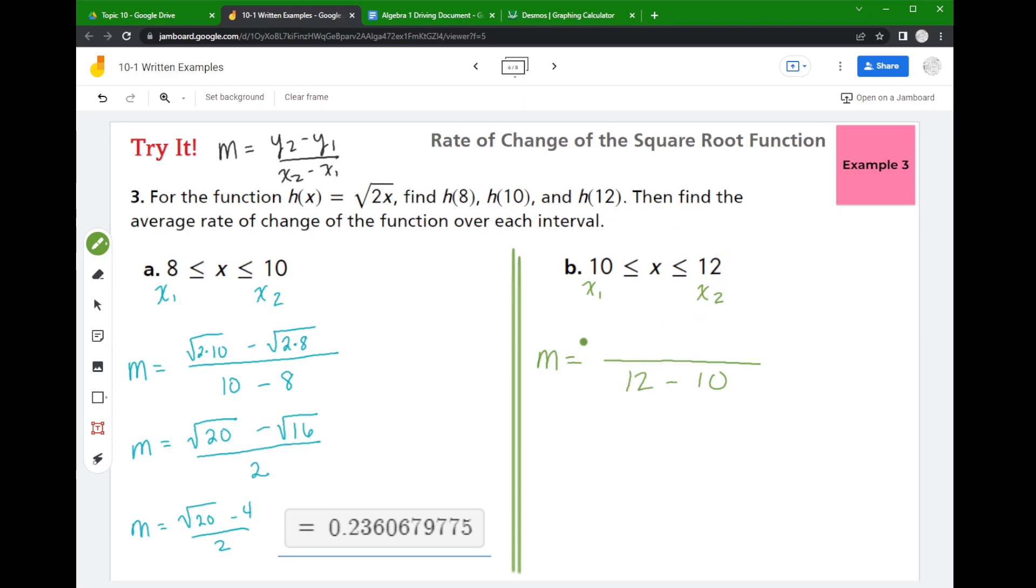So to get my y2, I take the x2 value and I plug it in. So here I'd have 2 times 12 minus, and then I'm going to plug my x1 value in—the square root of 2 times 10. Then we go through our cleanup step.